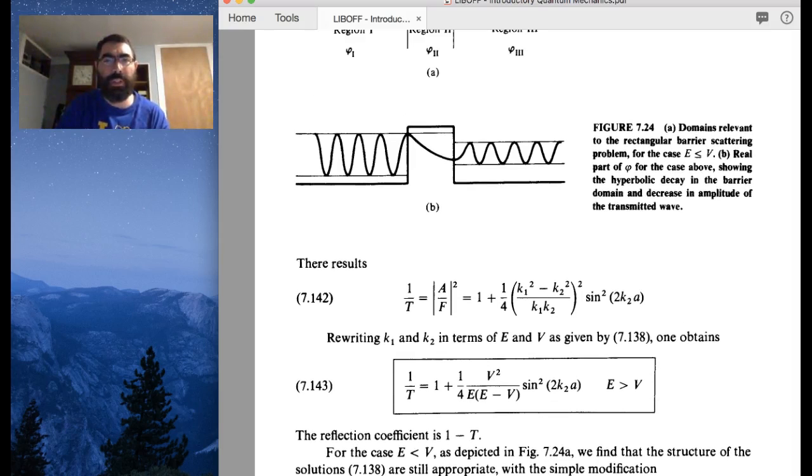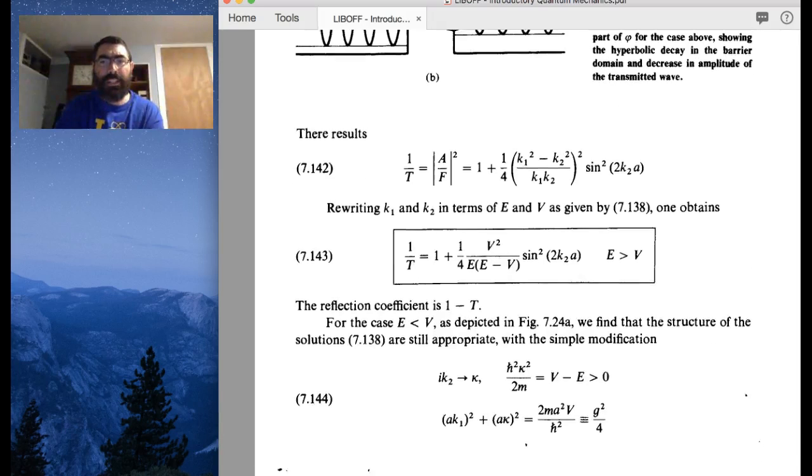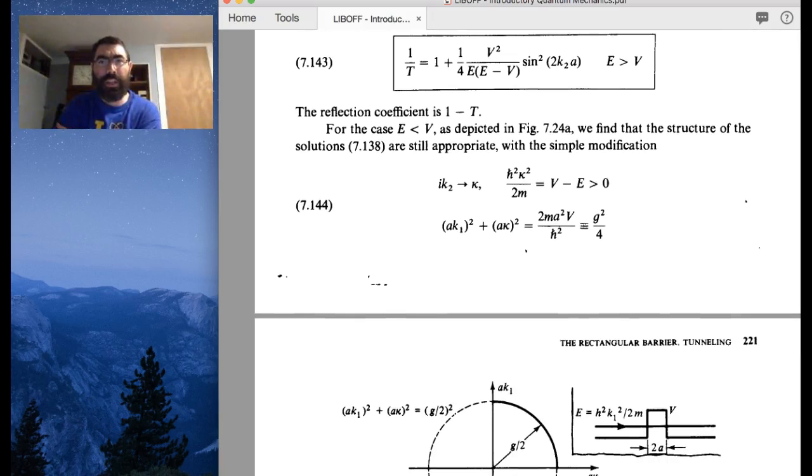So again, here's the picture now of the wave functions, the traveling wave on the left, the traveling wave on the right, and the exponential decay inside the barrier. And you get that exponential decay because now V is greater than E.